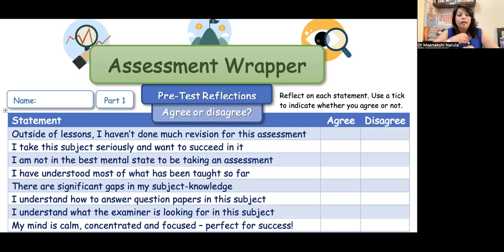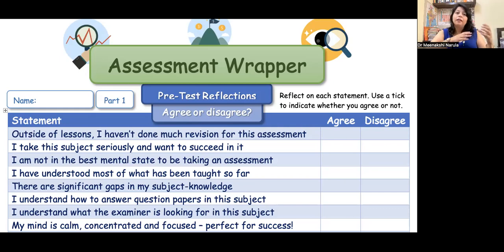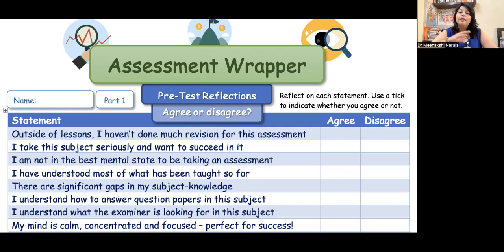'I understand well what the examiner is looking for in this subject.' We know what the examiner wants to ask in the paper — what topics will be assessed. Learning outcomes and learning objectives should be referred to, and then children will be able to clear it. We will also ask: 'My mind is calm, concentrated and focused — perfect for success.' If children are not prepared for the exam, what will they do? The state of mind is very necessary. You will know whether children are under stress or need help from parents, mentors, or siblings — that kind of environment is really very important.